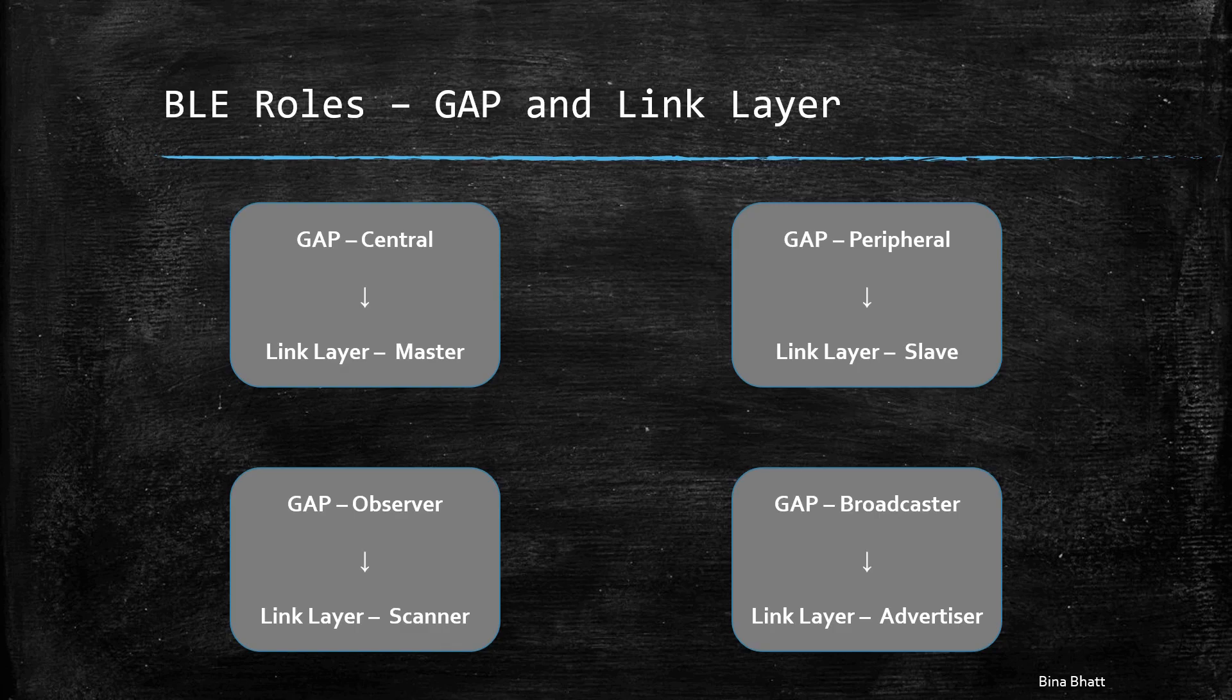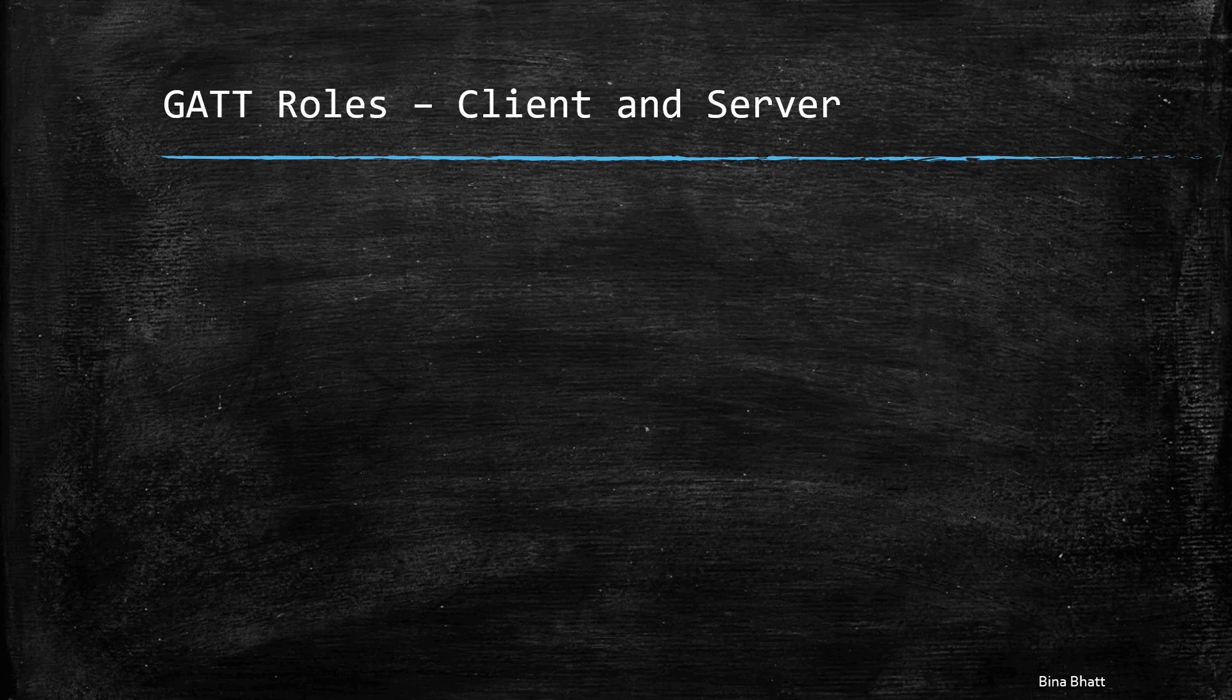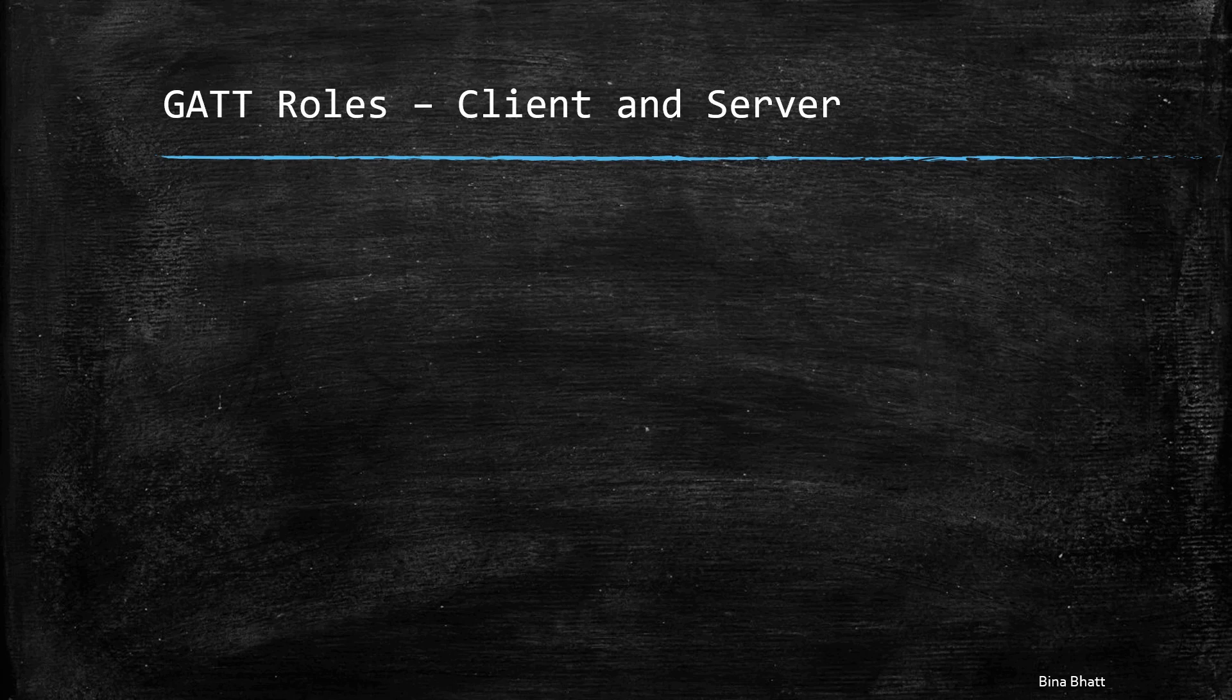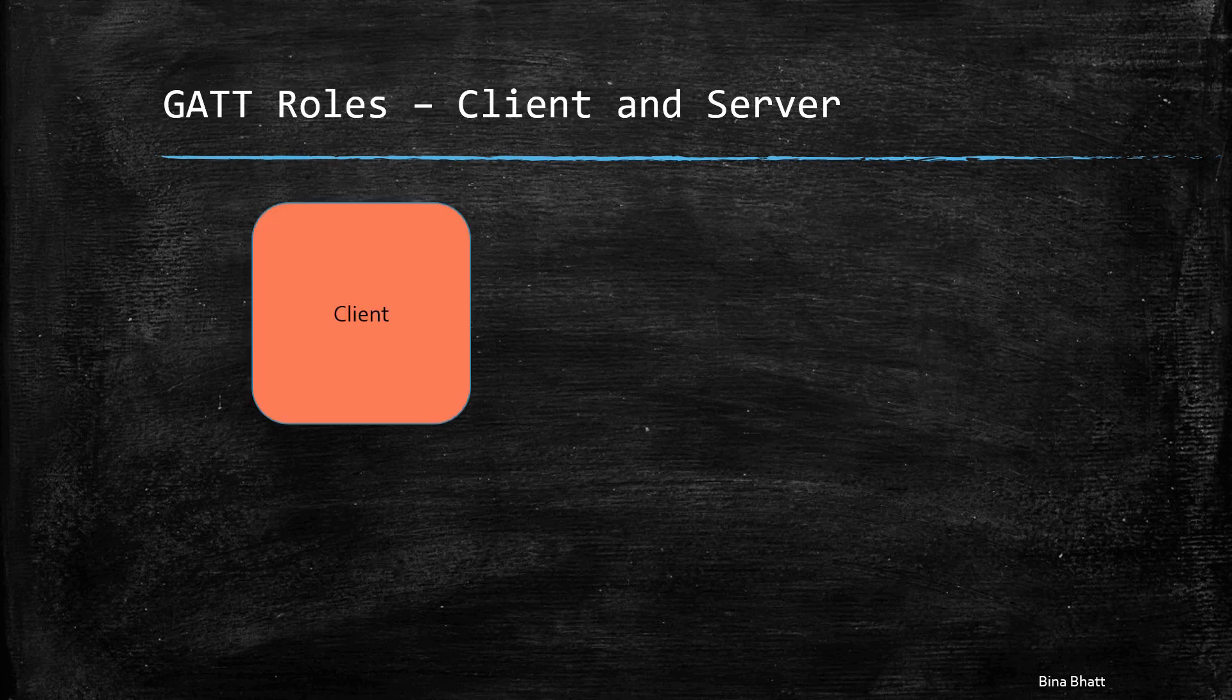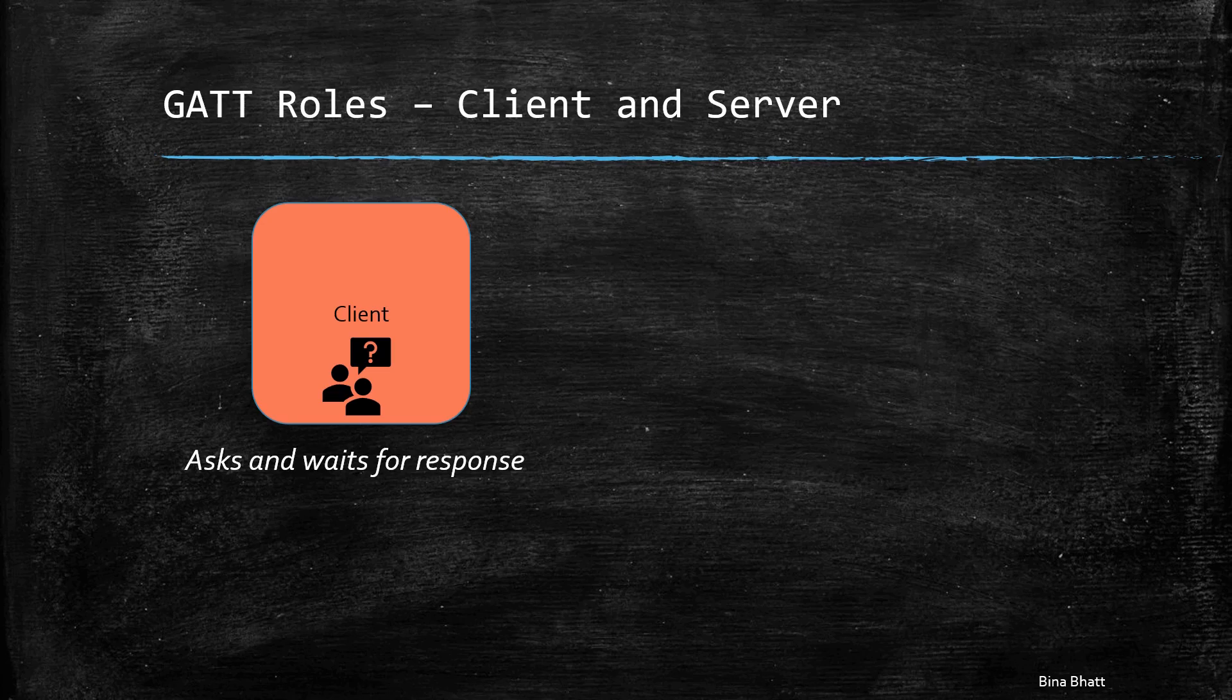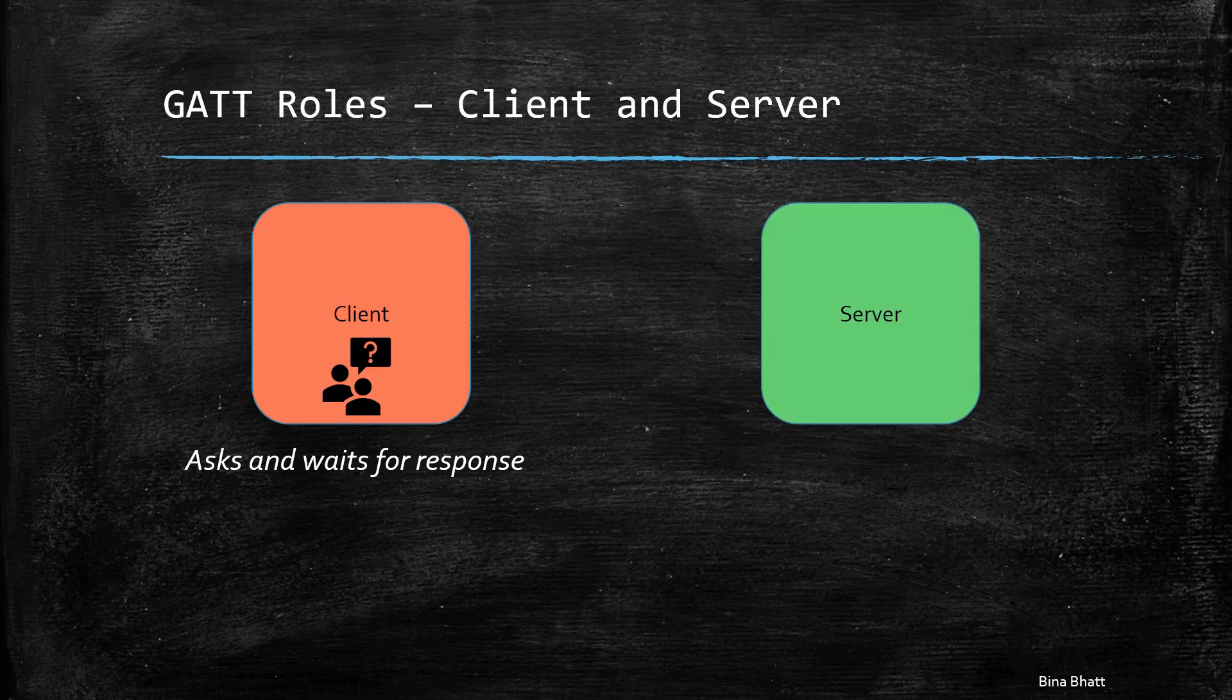So now let us look at the GATT roles. Let us quickly look at the client role. When the device is operating in the client role, it asks or requests for data because that's what a client does. It usually asks for data and then waits for a response.